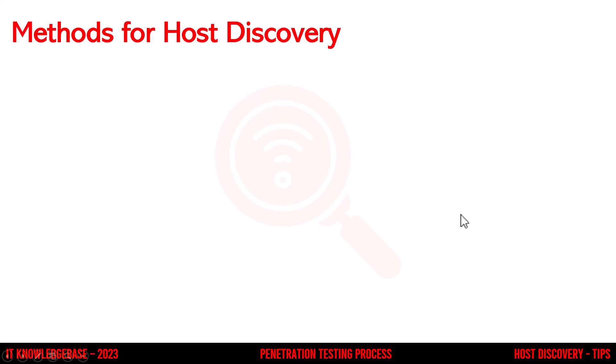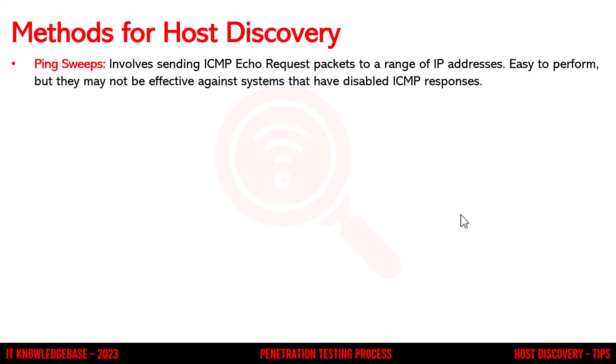Methods for host discovery. Several methods can be used to discover hosts on a network. Some of the most important methods include ping sweeps. Ping sweeps involve sending ICMP echo request packets to a range of IP addresses. The tester then analyzes the responses to determine which IP addresses are active on the network. While ping sweeps are easy to perform, they may not be effective against systems that have disabled ICMP responses.